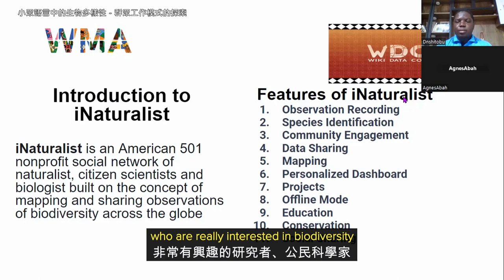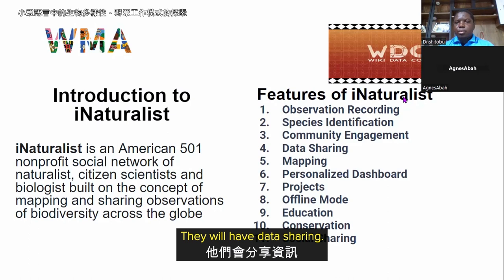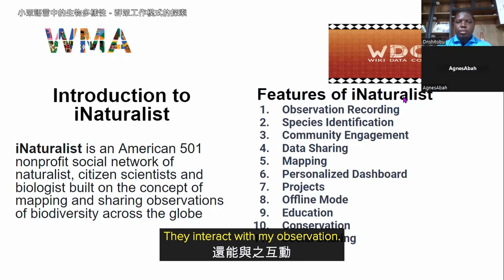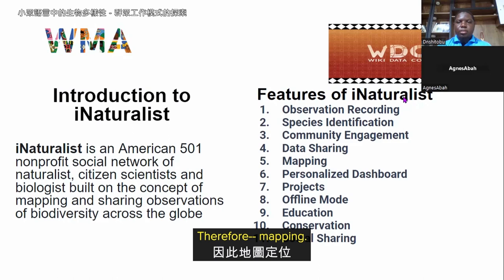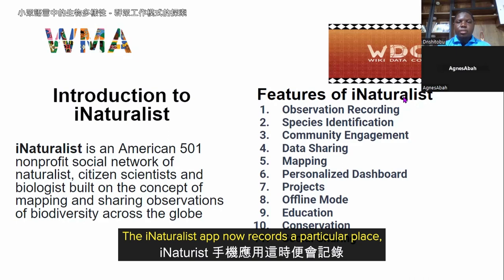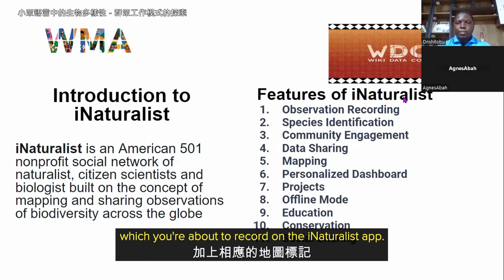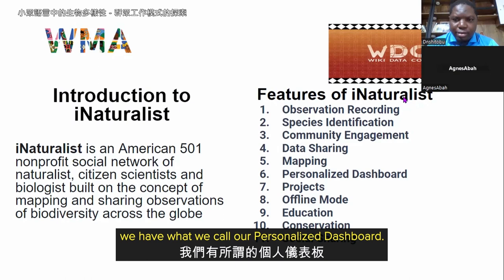iNaturalist also has data sharing — it is open, so people can see and interact with your observations. There is also geo-mapping: once an observation is taken, the iNaturalist app records the particular location where it was taken and maps it to that observation. The platform also includes a personalized dashboard similar to other social media networks.